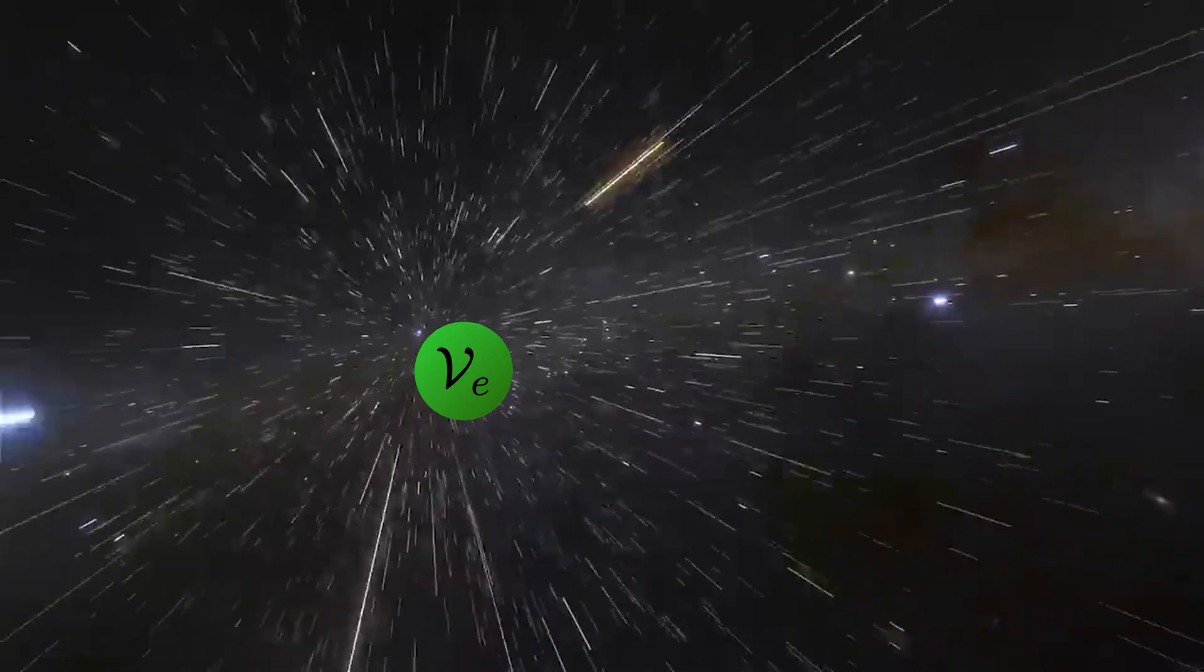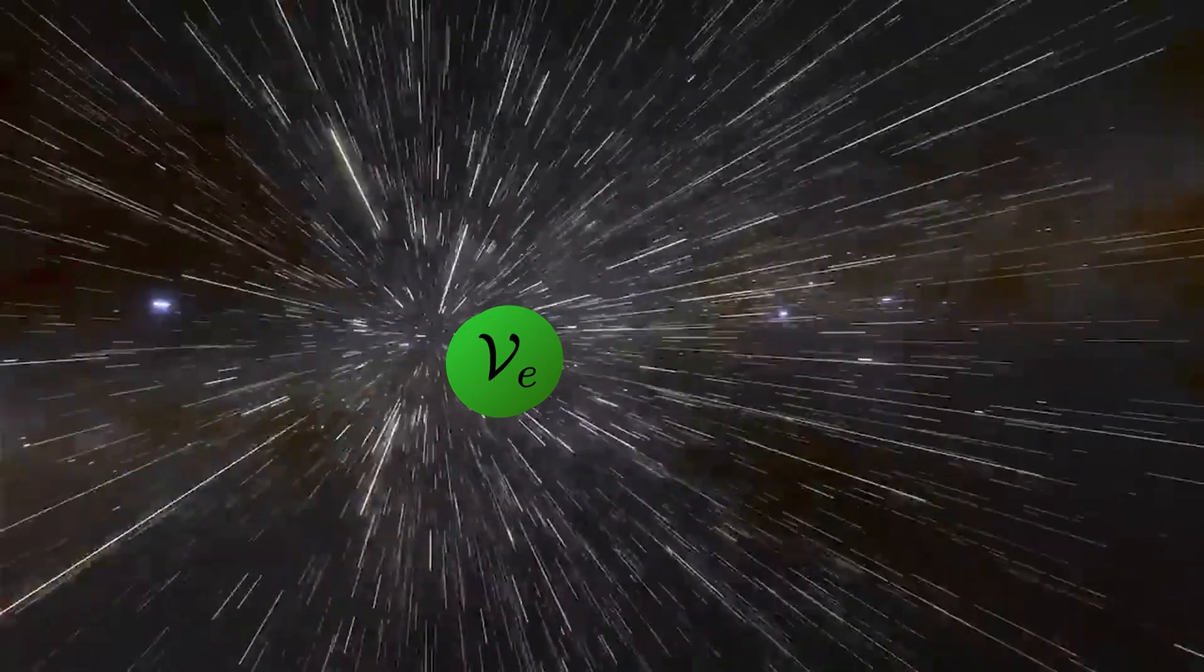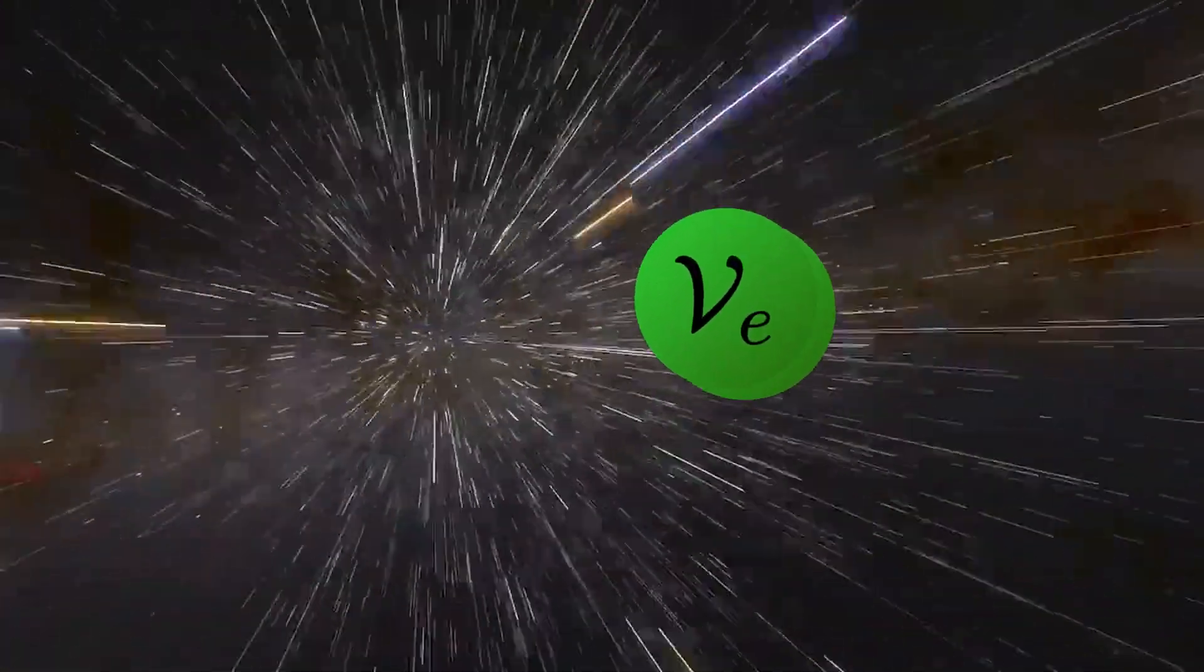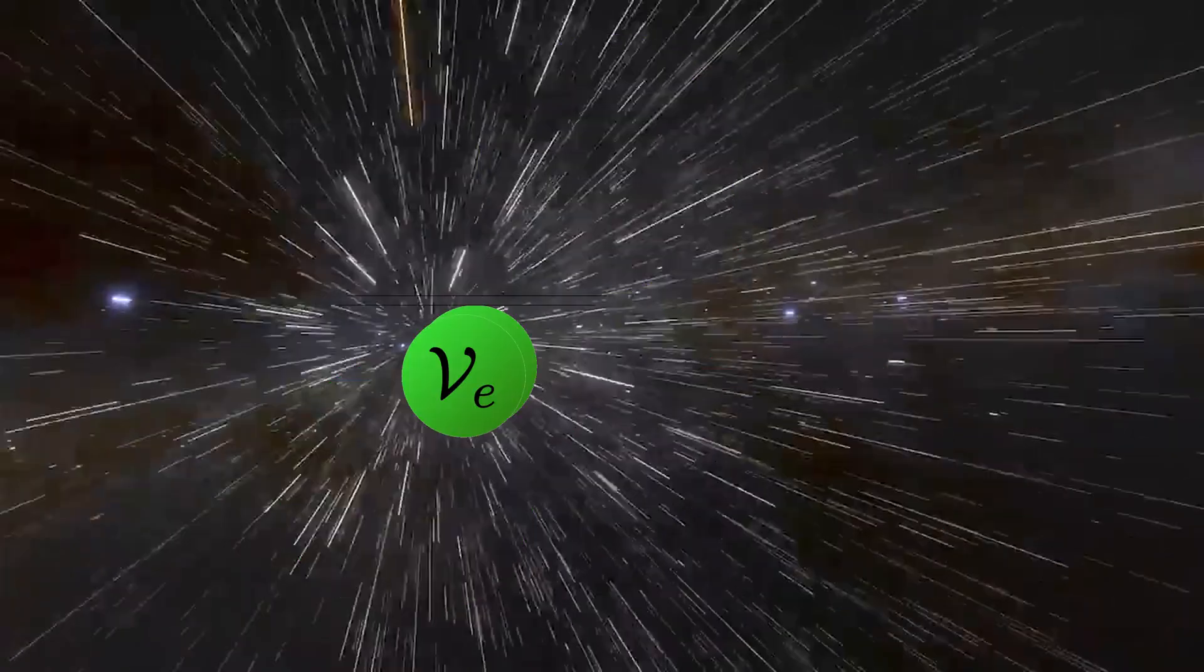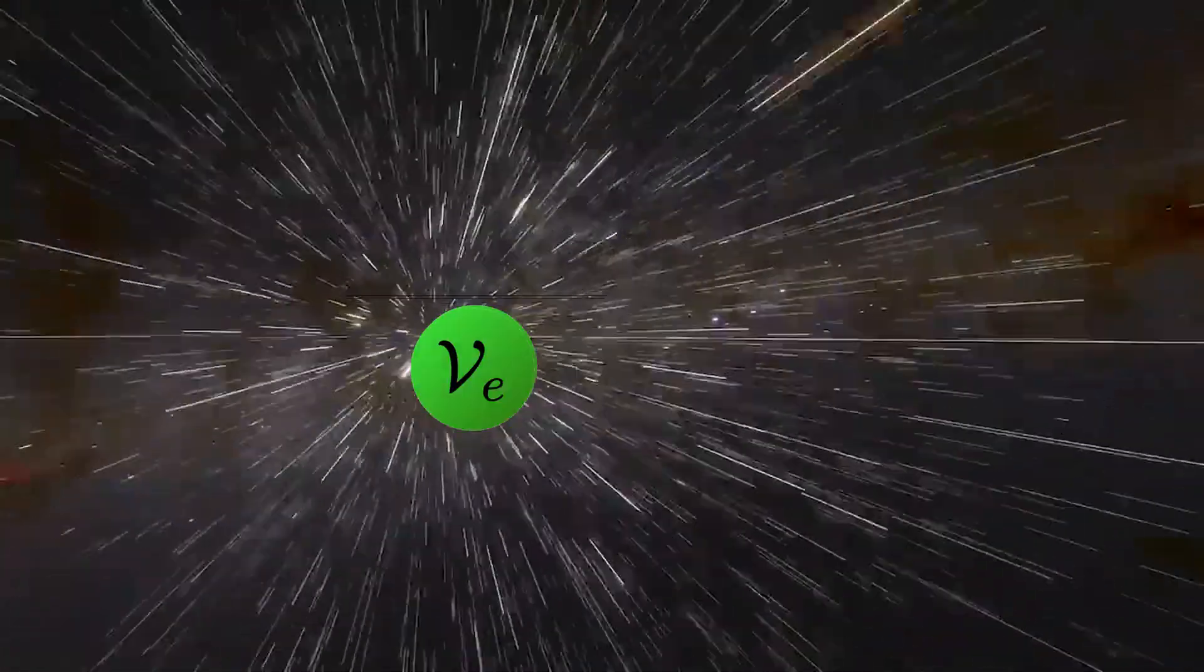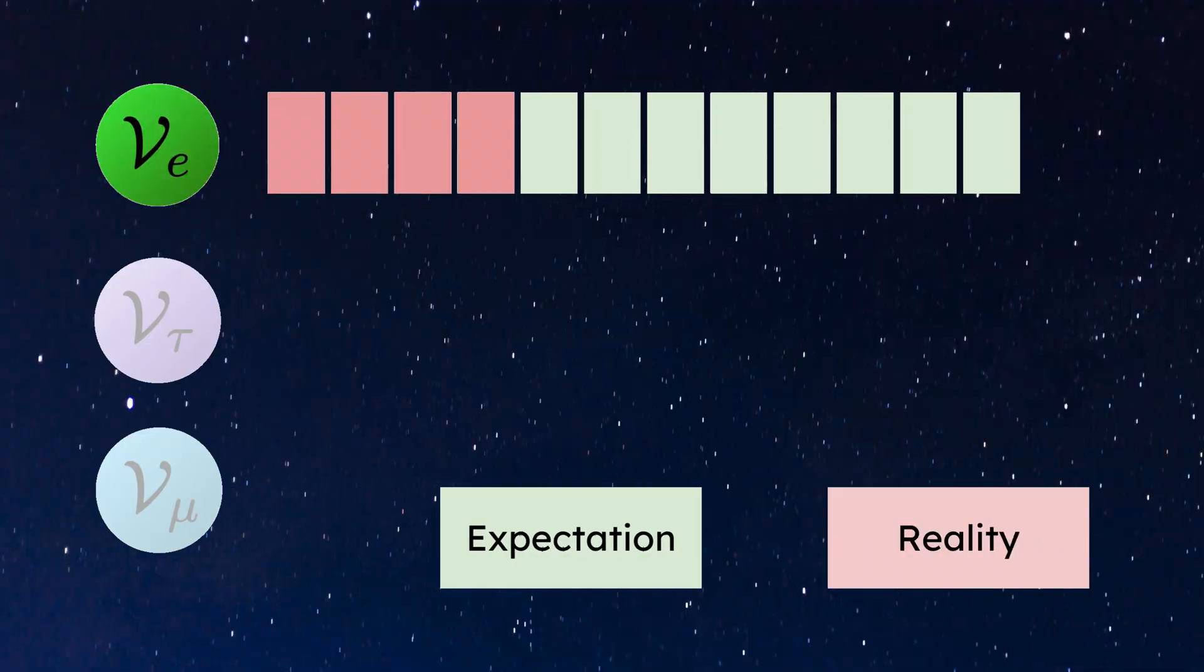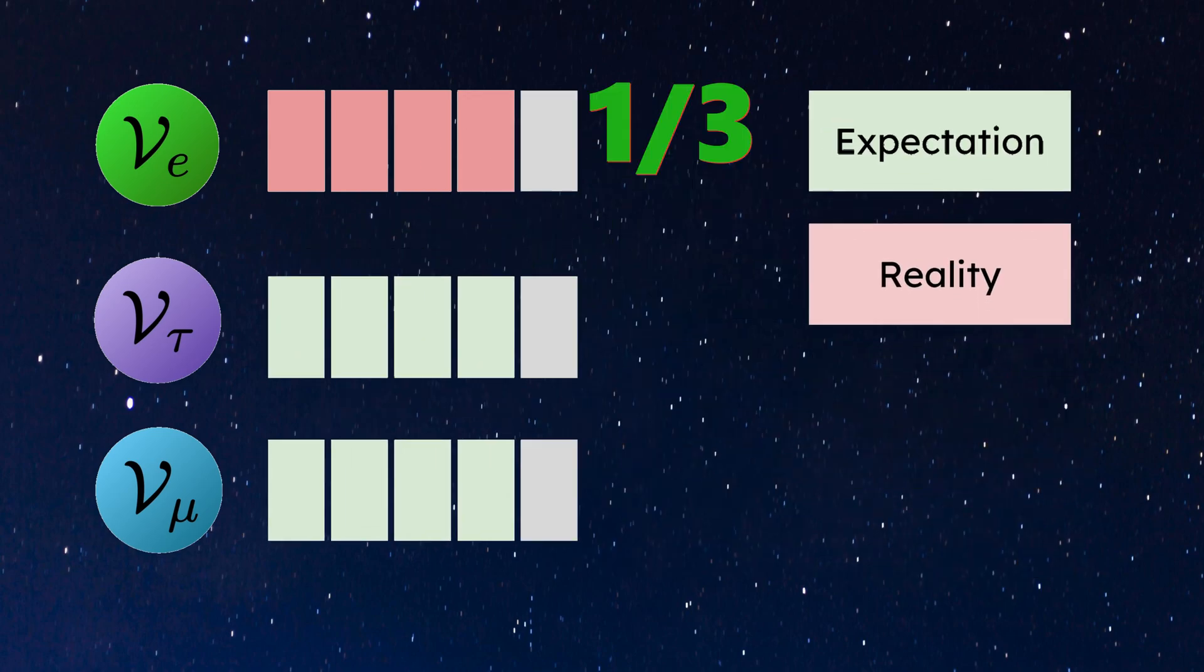When an electron neutrino is emitted from the sun, we used to think it would remain an electron neutrino forever. However, experiments found that neutrinos can actually convert into the two other flavors. That's why we only detect one-third of our expectation.